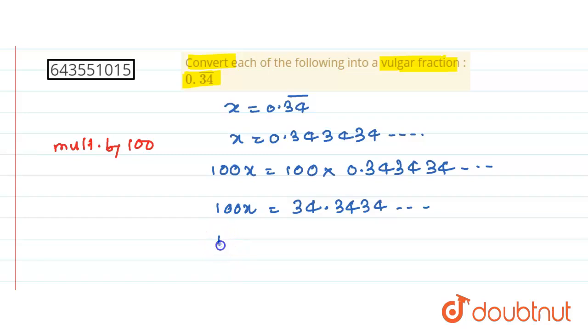Next, we can write this as 100x equals 34 plus 0.34, 34, and so on. But what is this? This is nothing but x. So 100x equals 34 plus x.